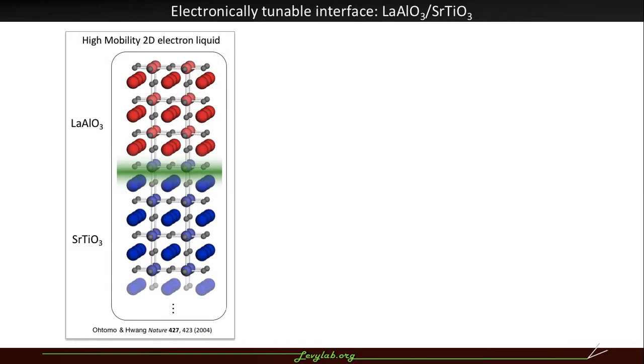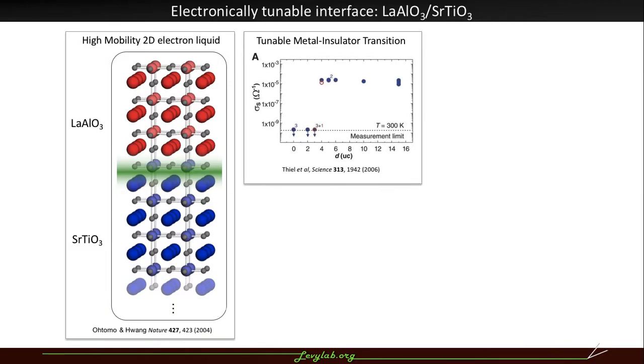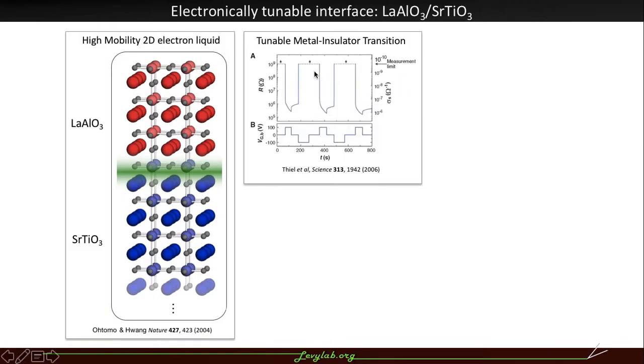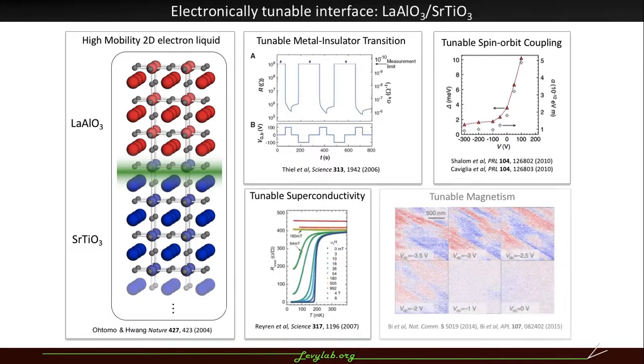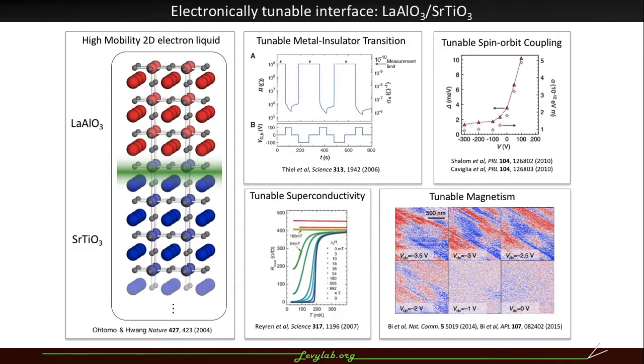This interface is electronically tunable. It has a tunable metal-insulator transition with either the number of unit cells of lanthanum aluminate or a gate voltage at the critical thickness. It has electronically tunable spin-orbit coupling, superconductivity, and even magnetism.